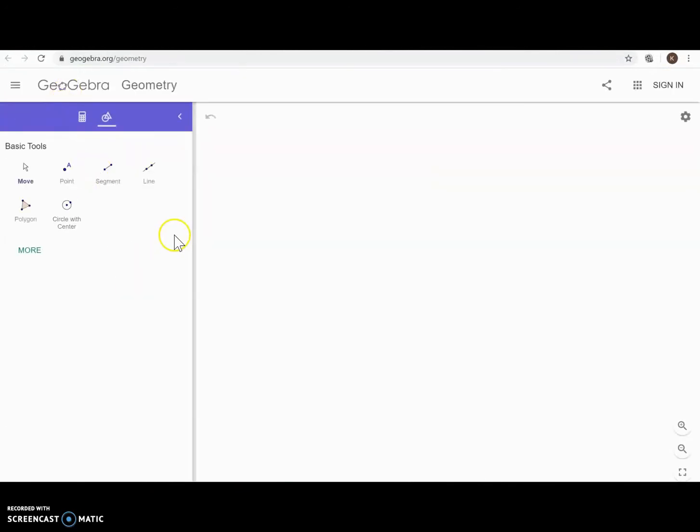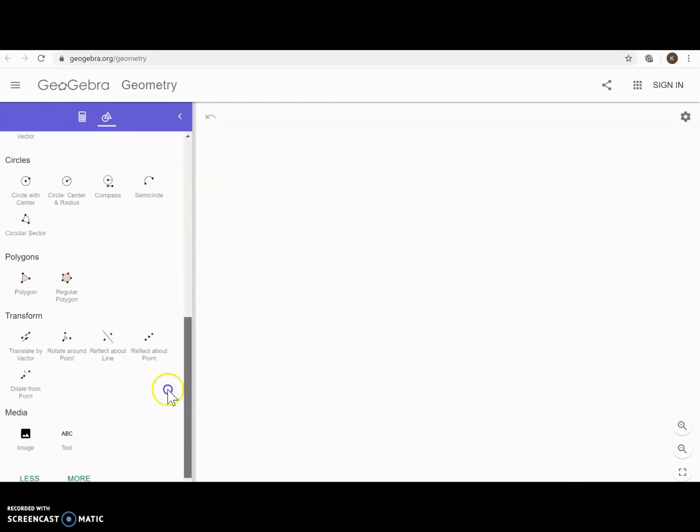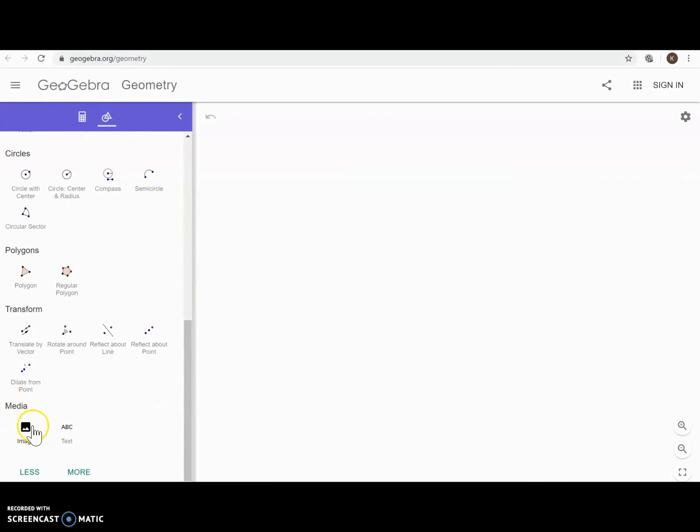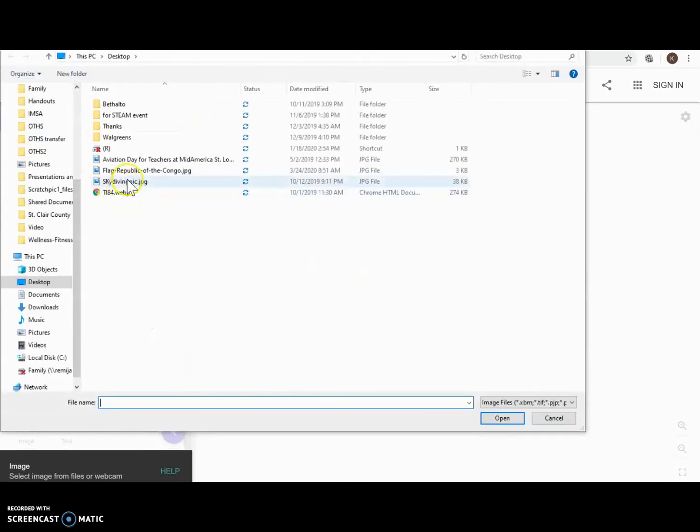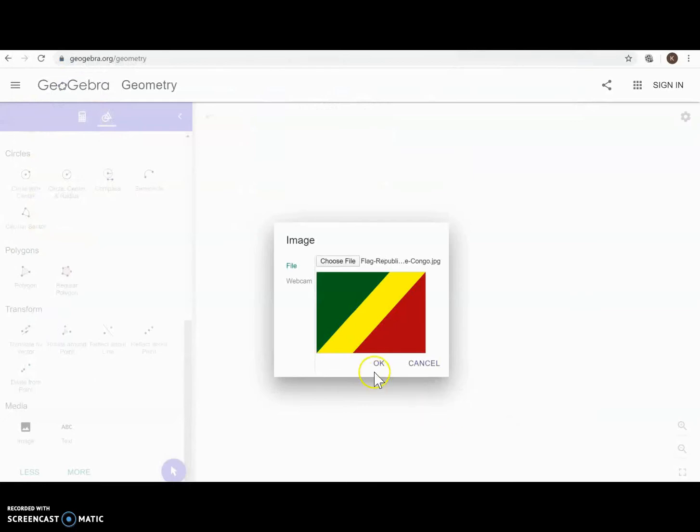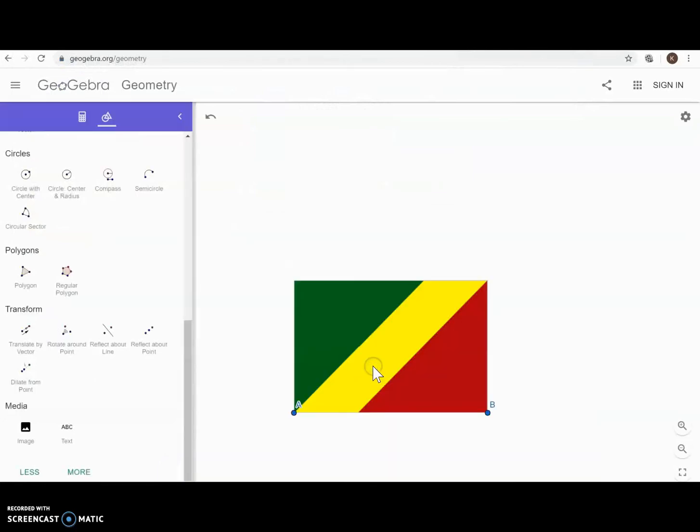And on the left side here, we are going to click More, and we're going to scroll all the way down to where it says Media, and we're going to click Image. We're going to choose the file that we just saved, which we remember we saved it on our desktop. And I'm going to open it. And there it is. Hit OK.